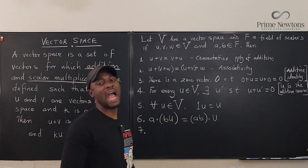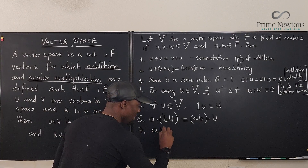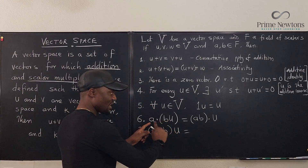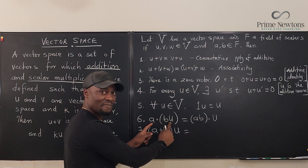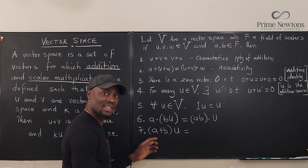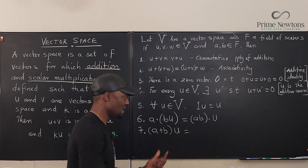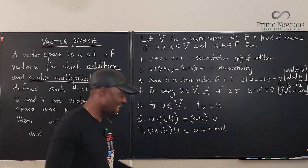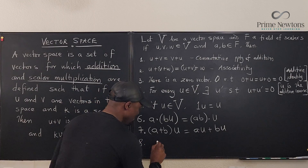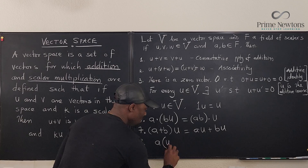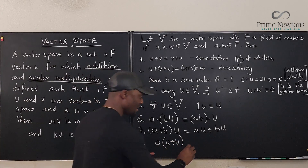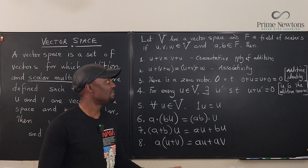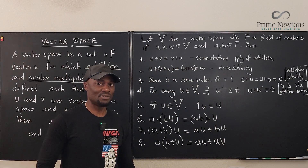Axiom 8: a times (u + v) equals a·u + a·v. You can distribute the scalar a over vector addition. Those are the eight axioms you always have to verify. What I want you to do is take two polynomials — let u = ax + b and v = cx + d — use p and q as your scalars, and verify everything I have said for a vector space of polynomials of degree one.